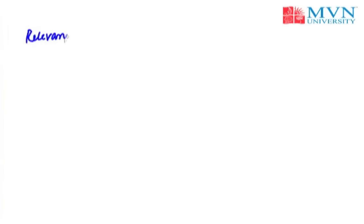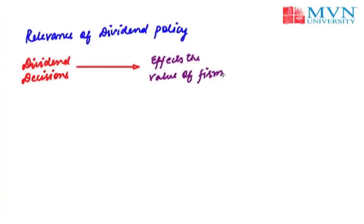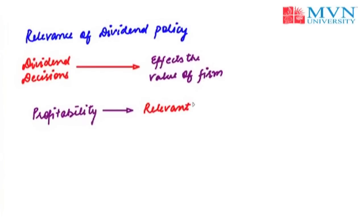Hello students, today we are going to discuss the relevance approach of dividend policy. The second school of thought on dividends holds that dividend decisions affect the value of the firm. According to them, dividends communicate information to investors about the firm's profitability, and hence dividend decisions become relevant. Firms which do not pay dividends are rated negatively by investors, which affects share prices.